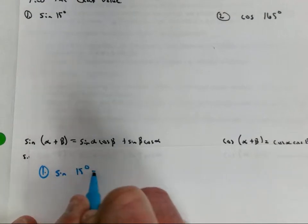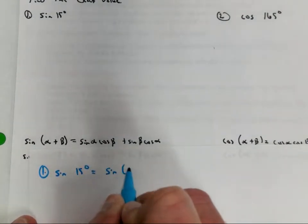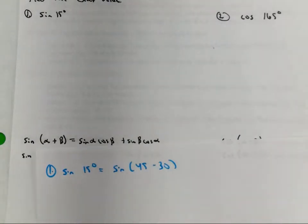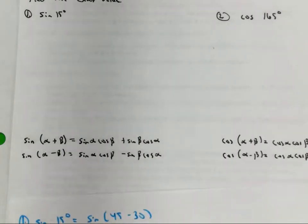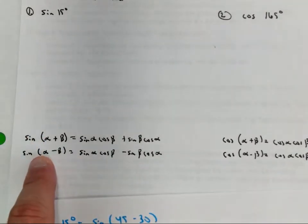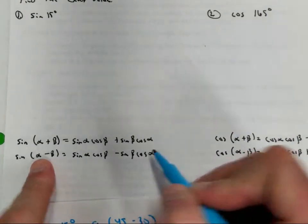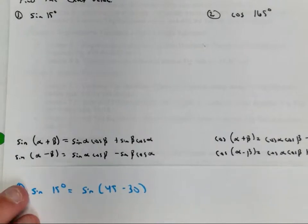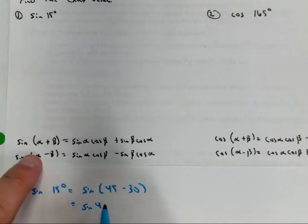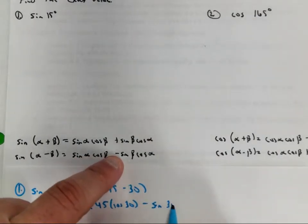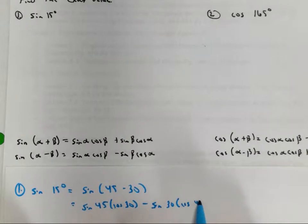Sine of 15 equals sine of 45 minus 30. Remember the formula — these formulas are in your notebook. So it's sine of the first times cosine of the second, minus cosine of the first times sine of the second. Sine of 45 is square root of 2 over 2. Cosine of 30 is square root of 3 over 2. Sine of 30 is 1 half. Cosine of 45 is square root of 2 over 2.